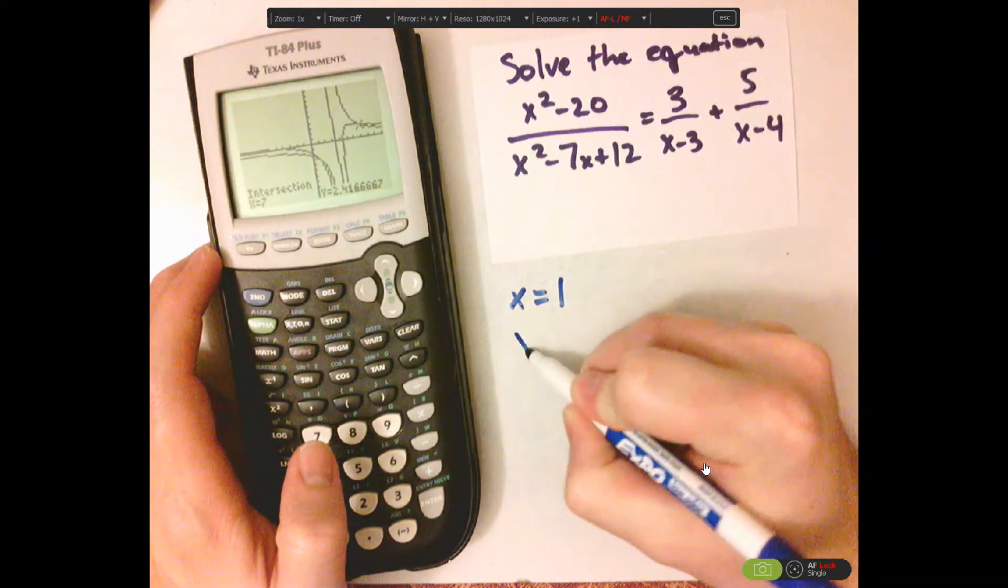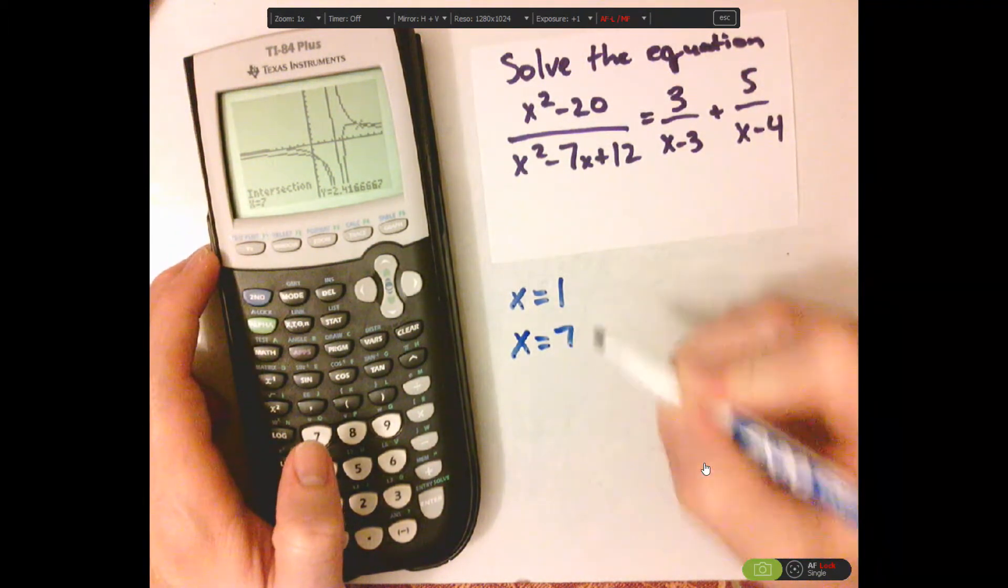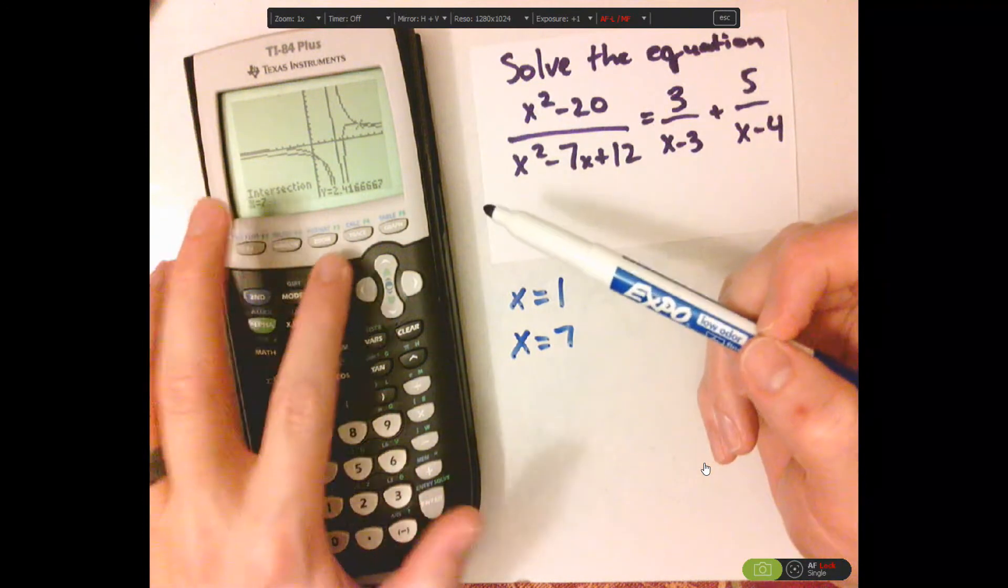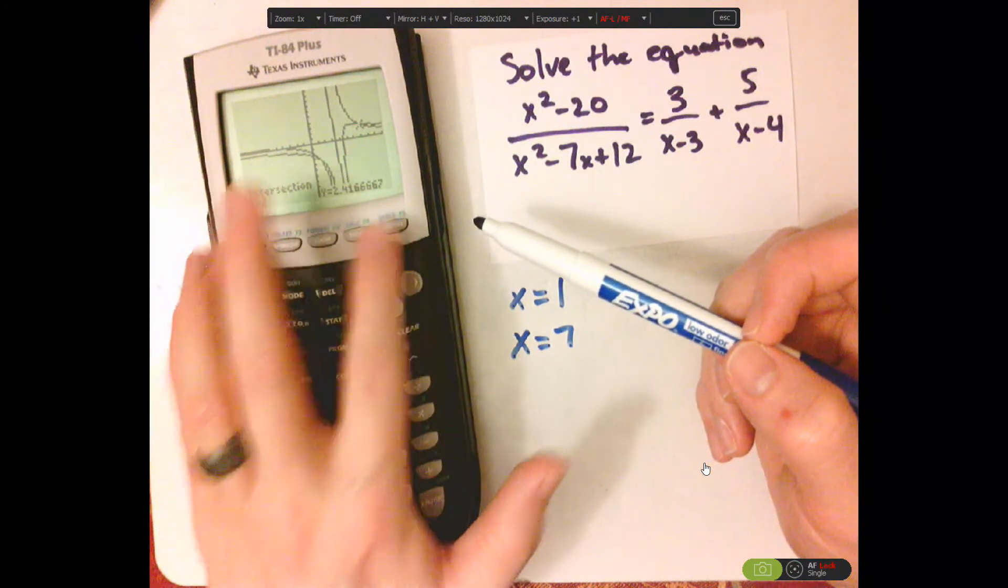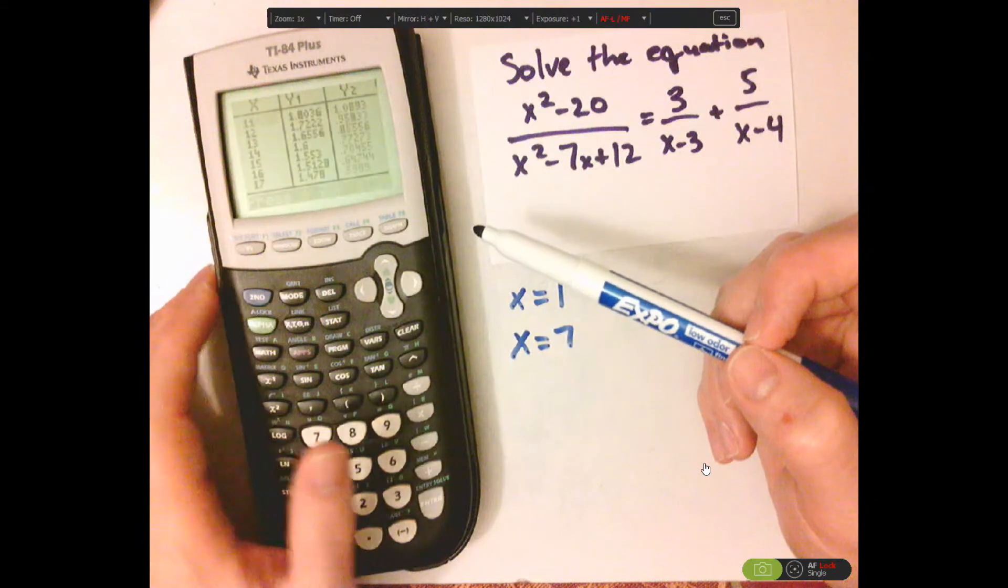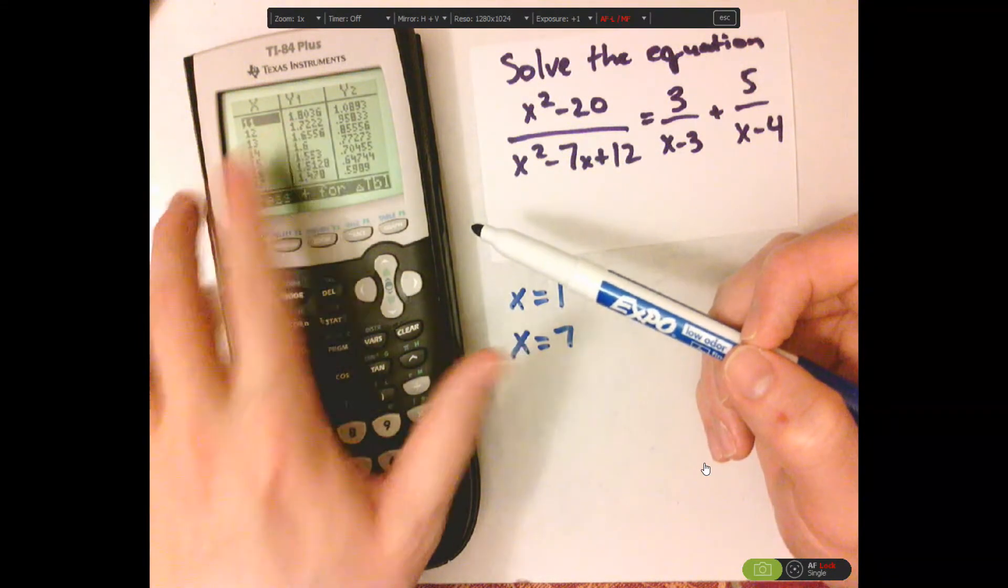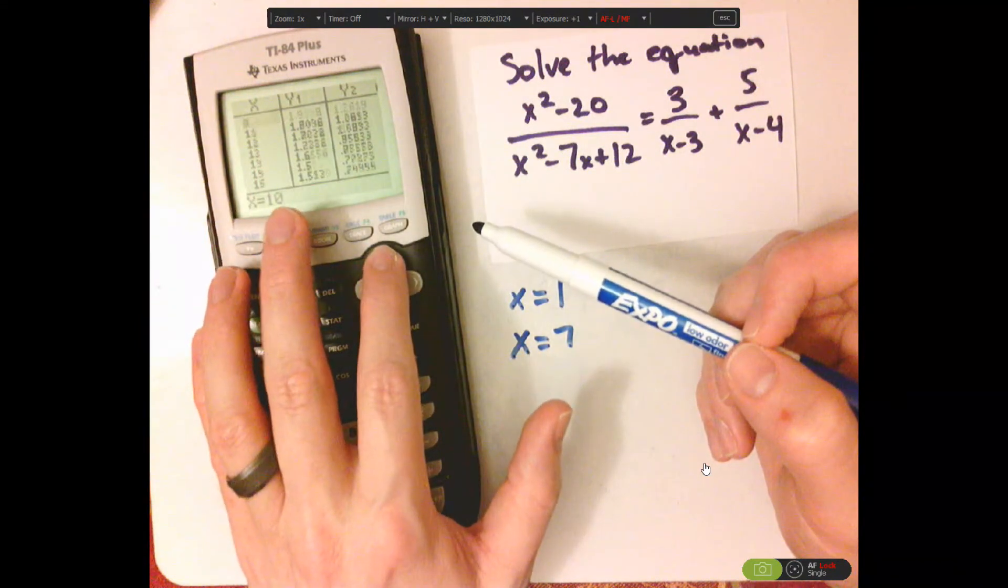x equals 7. I can also do this on the table feature. So, second table. Notice I have these in here already.